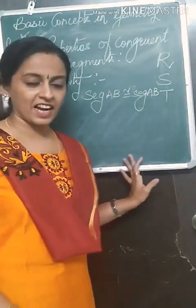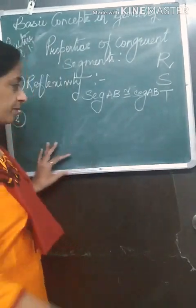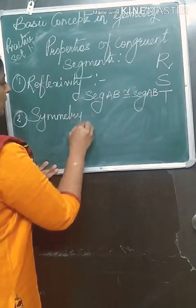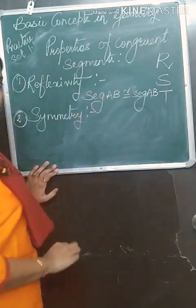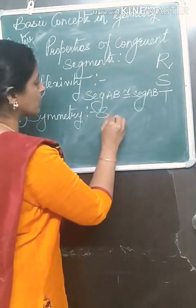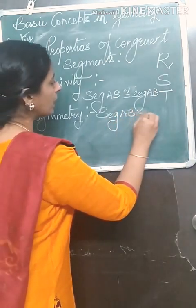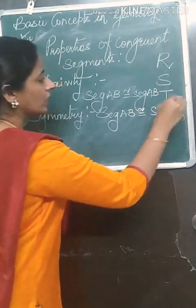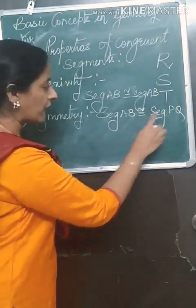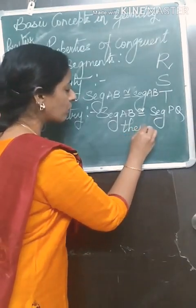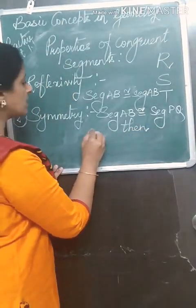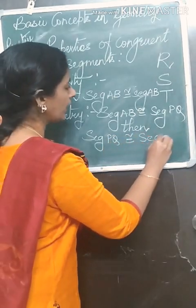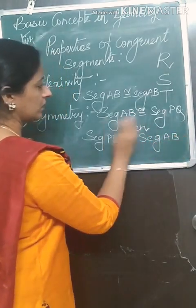The second property is S — symmetry. If segment AB is congruent to segment PQ, then I can also write it as segment PQ is congruent to segment AB. That is the property of symmetry.